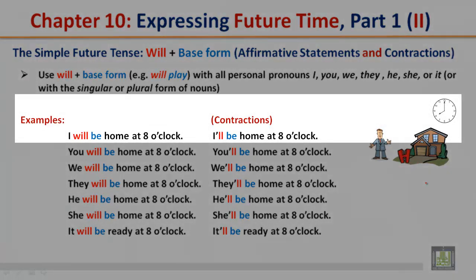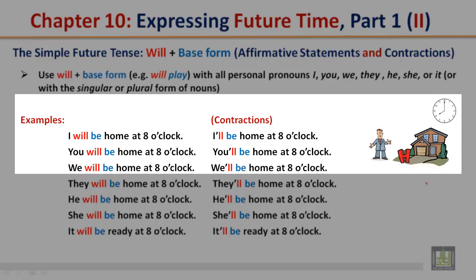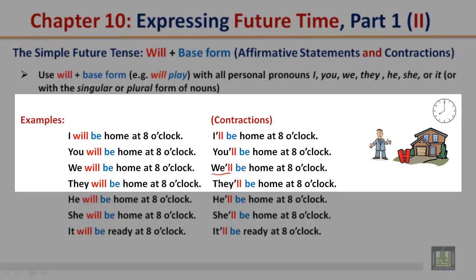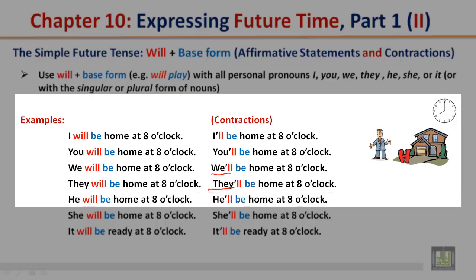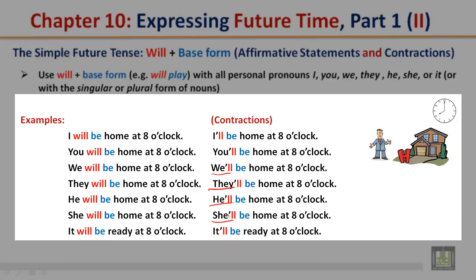Examples: I will be home at 8 o'clock — contraction: I'll be home at 8 o'clock. You will / you'll be home at 8 o'clock. We will / we'll be home at 8 o'clock. They will / they'll be home at 8 o'clock. He will / he'll be home at 8 o'clock. She will / she'll be home at 8 o'clock. It will / it'll be ready at 8 o'clock.